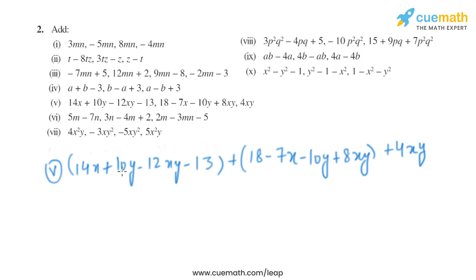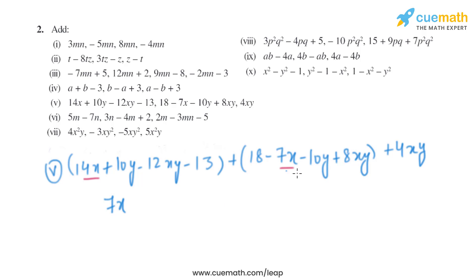The expressions in part 5 are 14x plus 10y minus 12xy minus 13, 18 minus 7x minus 10y plus 8xy, and plus 4xy. Solving like terms: 14x minus 7x gives us 7x, and 10y minus 10y gives us 0.